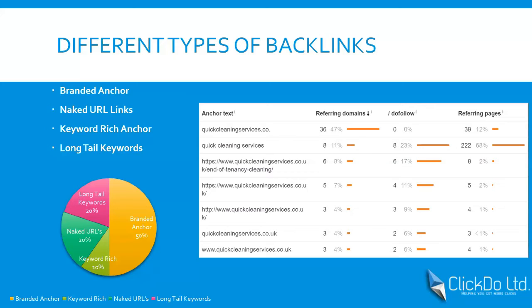Beyond anchor text, where you get the links from also matters — the authority of the website and the niche relevance. Google looks at the backlinks and the references where those links come from. If you have a cleaning company but most of your backlinks come from a dental website, that looks fishy — like you just bought a bunch of links. It's very important where you get the links from and the linking site's authority. You can adjust anchor text ratios if you are getting niche-relevant links.